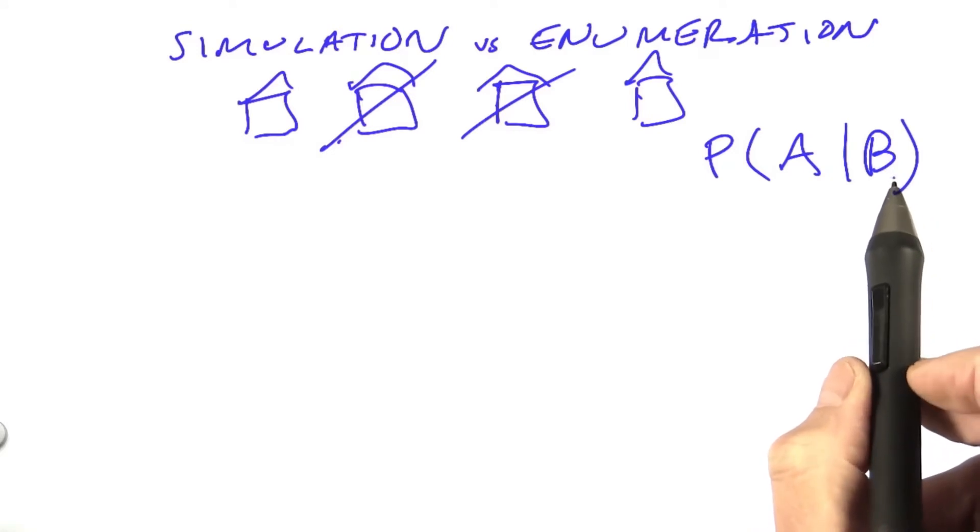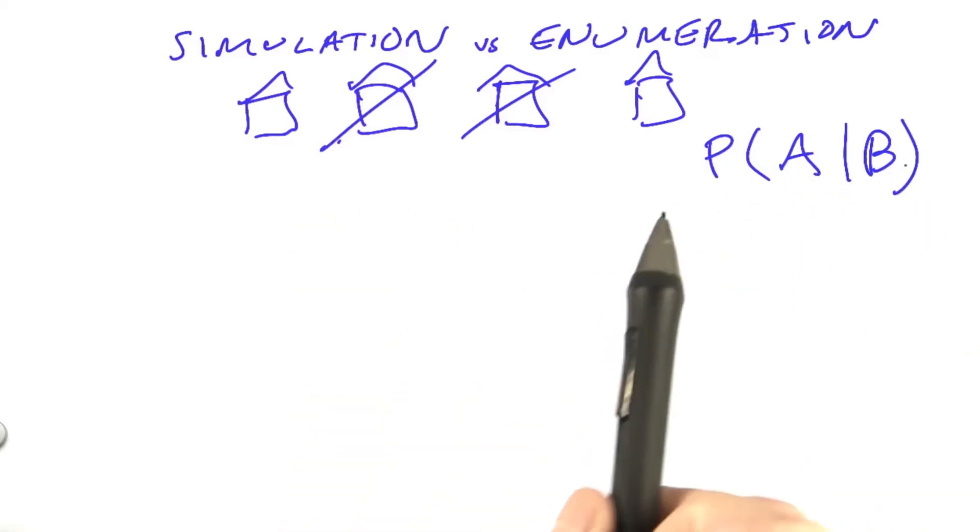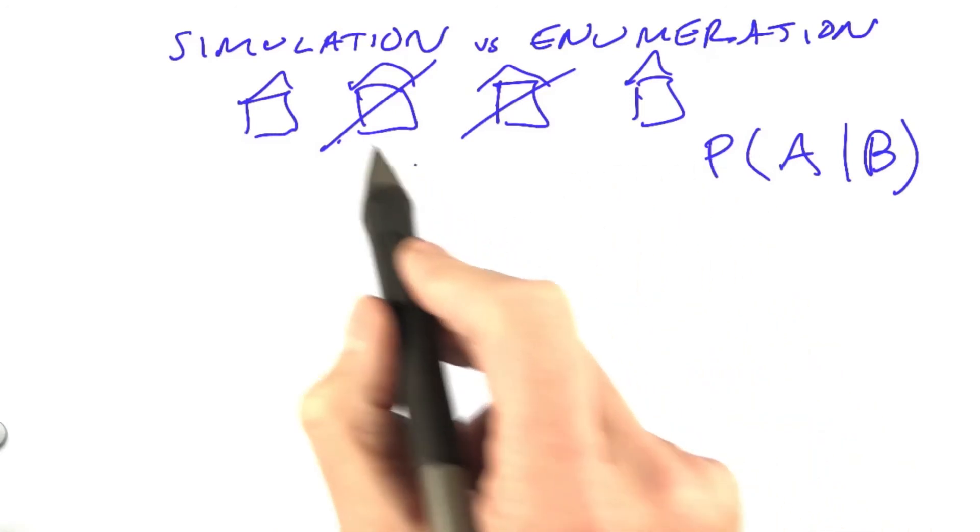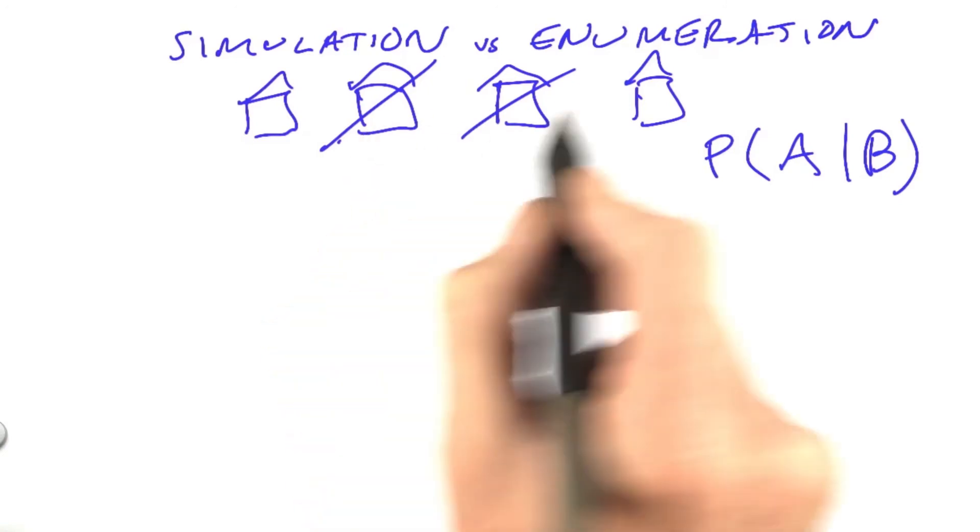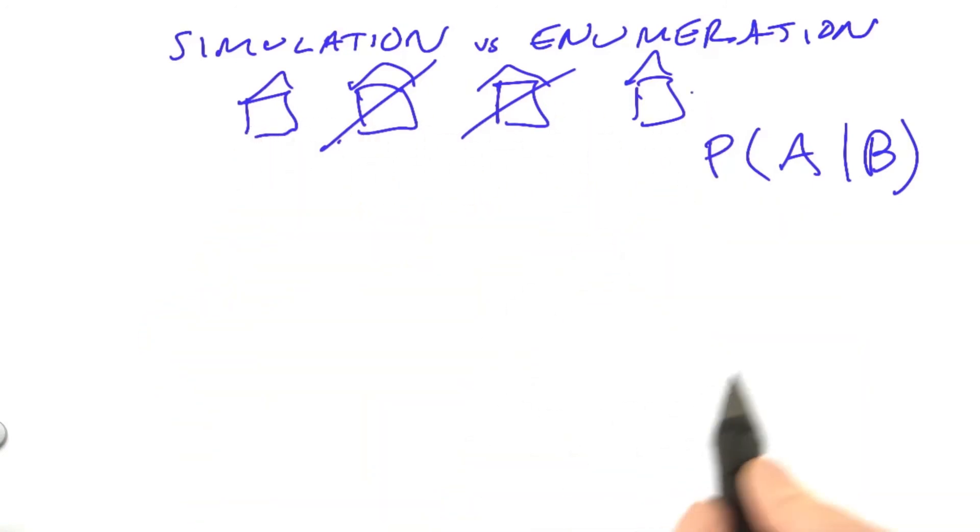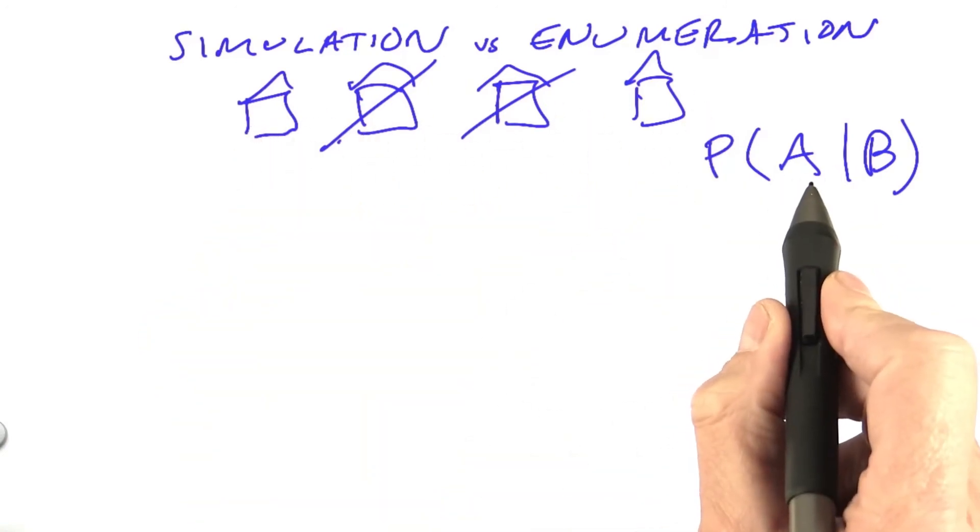An event is just a state of affairs. Event B might be the event of a family having exactly two children. We've crossed off these houses, and we're only taking these other ones. Event A might be the probability of having a boy or a girl, say.